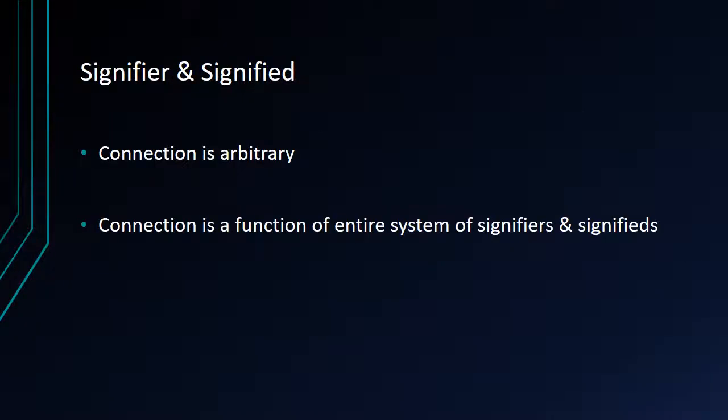So what does this tell us about the signifier and the signified? Well, that the connection between them is arbitrary. There is no reason, except for the historical happenstances of how a language has developed, that connects any one word to any one meaning. The connection is in some way a function of the entire system of signifiers and signifieds. It's because we have this whole network of terms that are different from each other but closely related, referring to a whole network of concepts that are again related but different, that we have any connection between them. One signifier cannot mean anything without the whole network, and neither can any concept have meaning without the whole network of other concepts at its back.